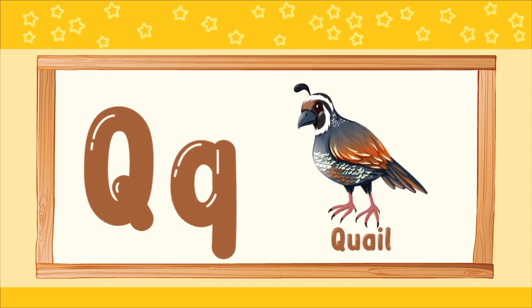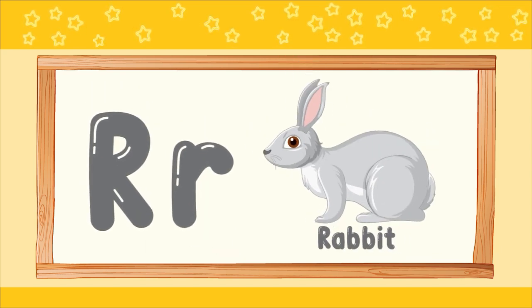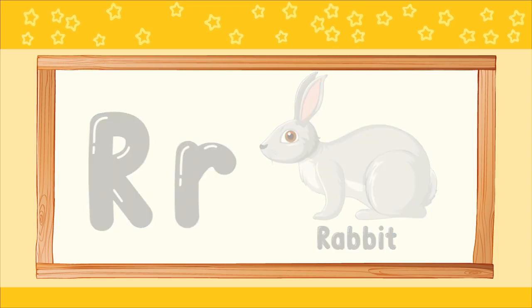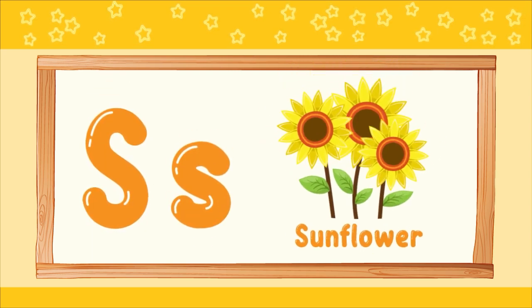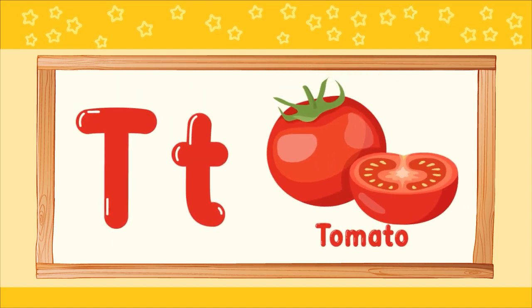Q. Q for queer. R. R for rabbit. S. S for sunflower. T. T for tomato.